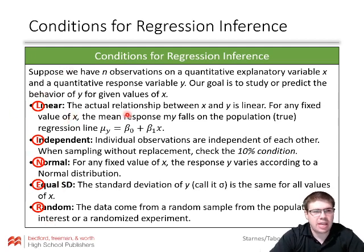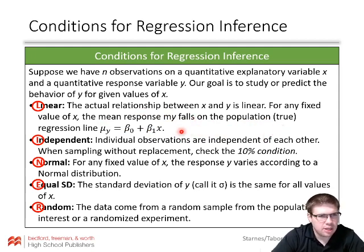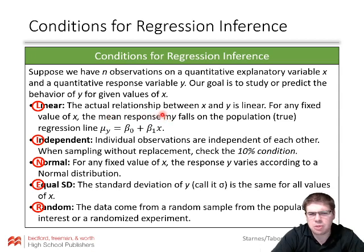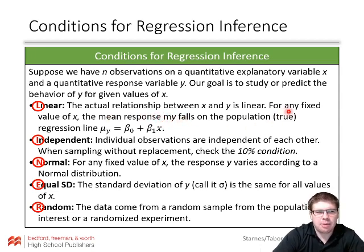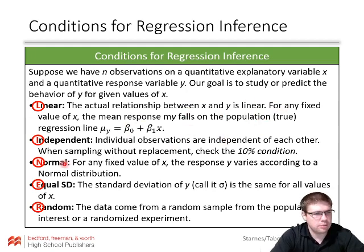First, is it linear? The actual relationship between x and y is linear — for any fixed value of x, the mean response mu sub y falls on the population regression line. The best way to check that is with a residual plot. Independent: the individual observations are independent of each other. When sampling without replacement, check the 10% condition.